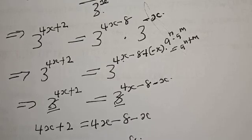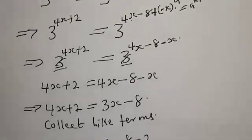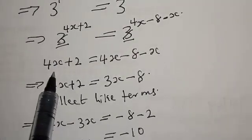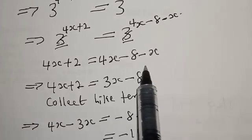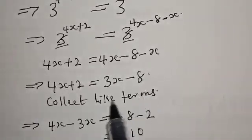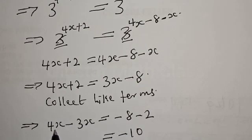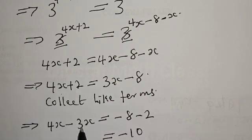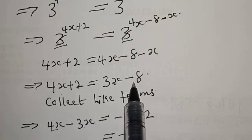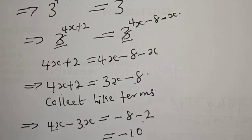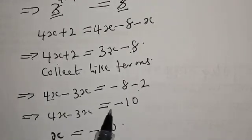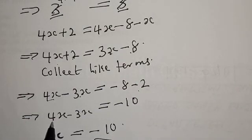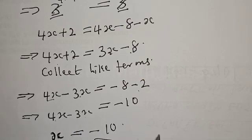They have the same base, so the bases cancel. We are left with 4X plus 2 equals 4X minus 8 minus X. That is our linear equation. Collecting like terms: 4X minus 3X equals minus 8 minus 2 — that is, plus 2 crosses the other side to become minus 2. Therefore 4X minus 3X equals minus 10, giving us X equals minus 10.